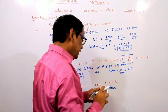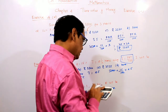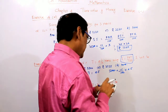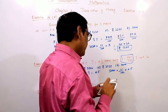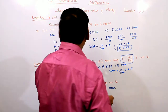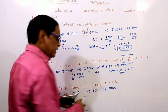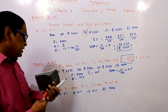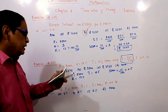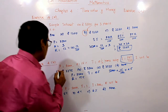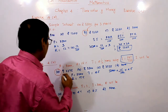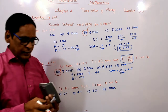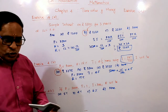Multiply: 50 into 15 into 4.5 = 3,375. That is the answer. Clear? Next question.